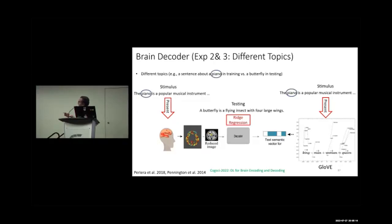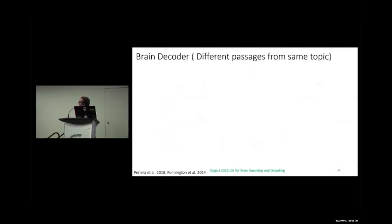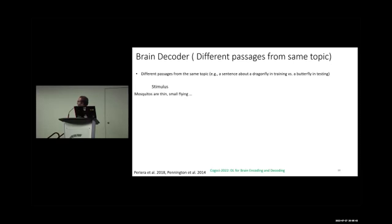In the different-topics setup, the training uses only apartment-related sentences but testing uses butterfly-related sentences. The second experiment tests different passages from the same topic: the topic is insects, with dragonfly used in training and butterfly used in testing — different passages but the same topic.